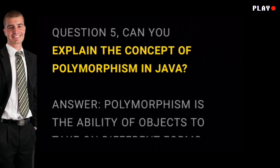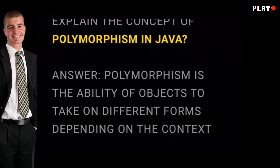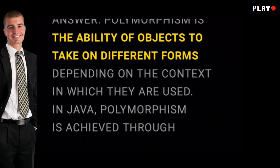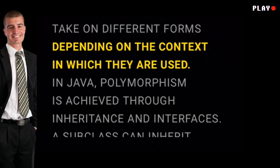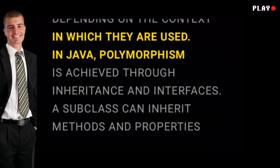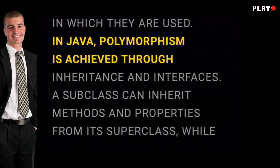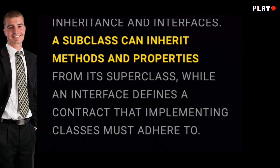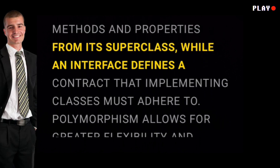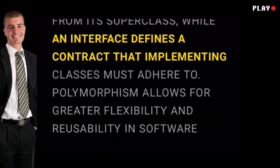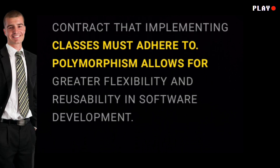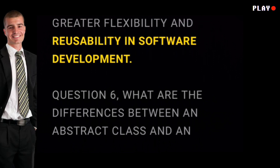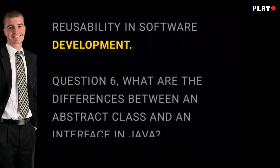Question five: can you explain the concept of polymorphism in Java? Answer: polymorphism is the ability of objects to take on different forms depending on the context in which they are used. In Java, polymorphism is achieved through inheritance and interfaces. A subclass can inherit methods and properties from its superclass, while an interface defines a contract that implementing classes must adhere to. Polymorphism allows for greater flexibility and reusability in software development.